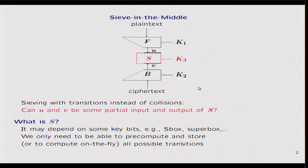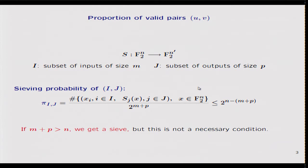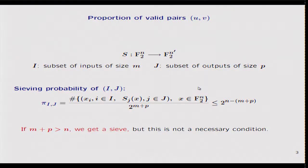The important parameter of the attack is the proportion of valid pairs U, V. M denotes the number of bits of U — the number of inputs we are able to compute for function S — and P is the number of outputs we are able to compute. If S operates on n-bit words, then the number of possible pairs of input and output for S is exactly 2^n. So the proportion of valid pairs U, V is always less than or equal to 2^(n minus M plus P). This means that if M plus P is strictly greater than n, the probability is strictly less than one-half, so we get a sieve.